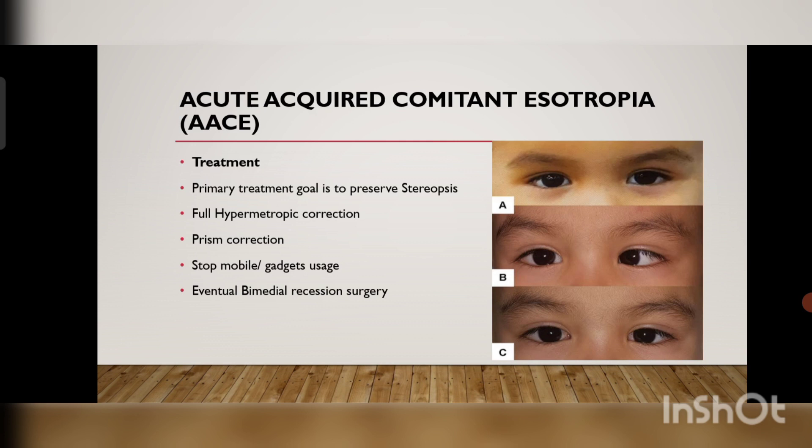If nothing is possible with these conservative measures and there is no improvement, eventually bimedial recession surgery needs to be done. The first and most important step is conservative treatment to develop the stereopsis — if you can develop the stereopsis, that is much better for the child.